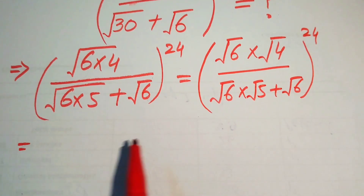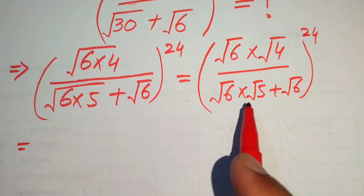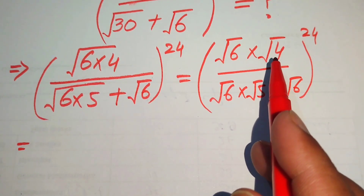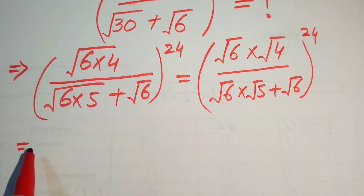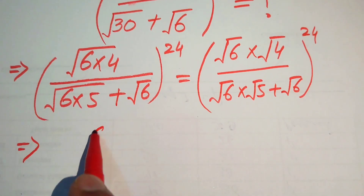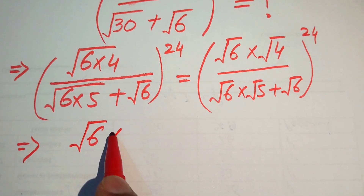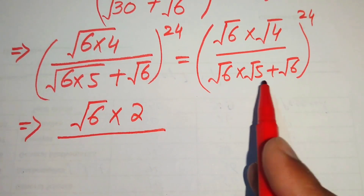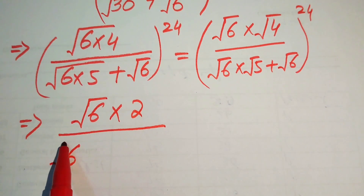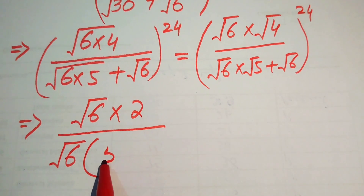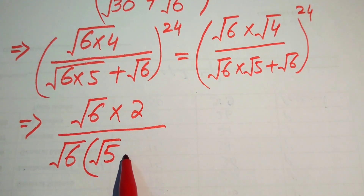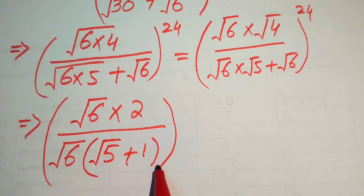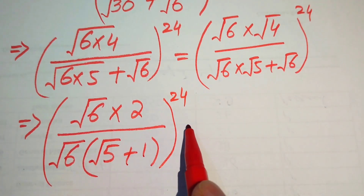Now we focus on the denominator. Square root of 4 equals 2, so the numerator becomes square root of 6 multiplied by 2. In the denominator we factor out square root of 6, leaving the remaining terms as square root of 5 plus 1, and the whole exponent is 24.